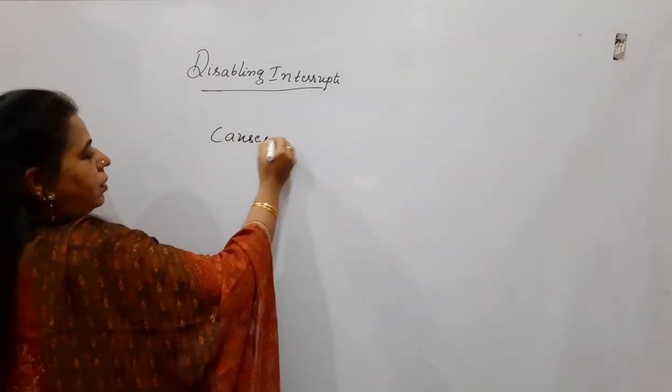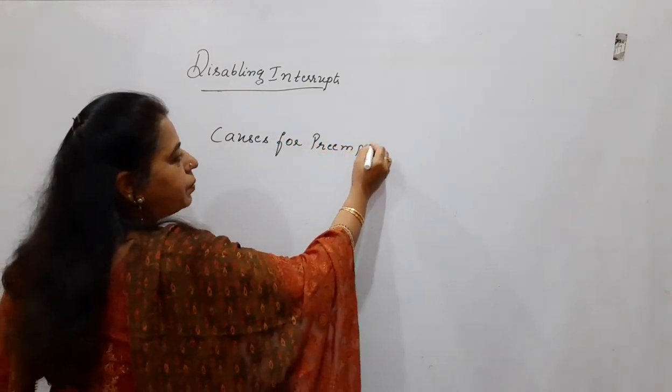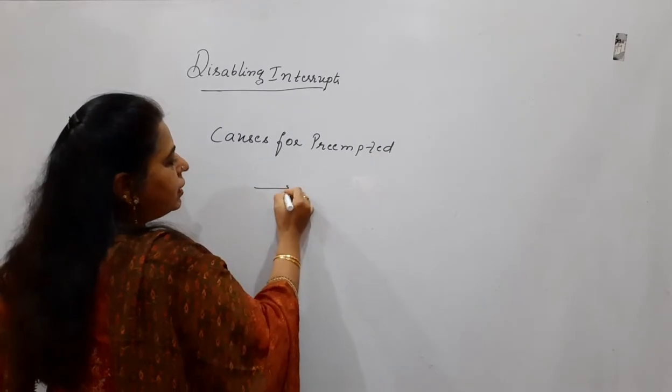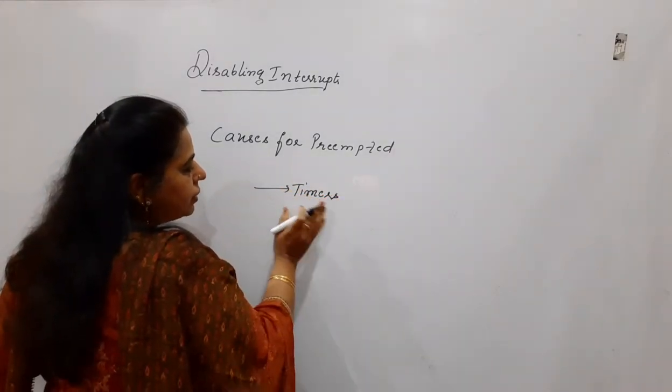Causes for preemption. When does a process get preempted? First thing is, because we have the time slicing concept here, a timer is set.